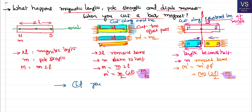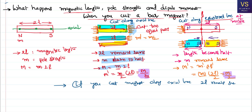To summarize: if you cut a bar magnet along the axial line, the length remains the same but pole strength gets affected — and because pole strength gets affected, magnetic moment gets affected. When you cut the magnet along the equatorial line, the length gets affected but pole strength remains the same — and because length is affected, magnetic moment gets affected. That is how we understand the basics of cutting a bar magnet.